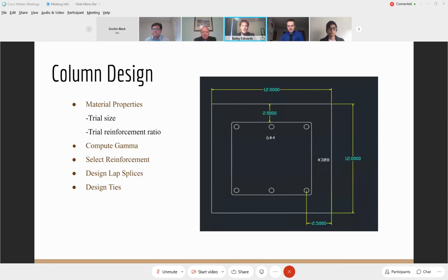On this slide, we can see our column design. We came up with a 12 inch square column with six number four bars to withstand the axial force, and then number three stirrups at eight inches on center to withstand the shear force.